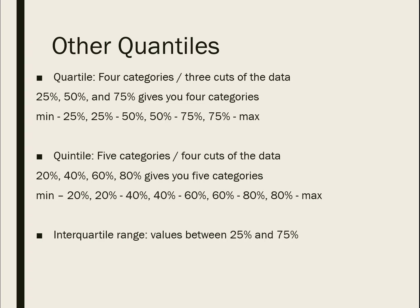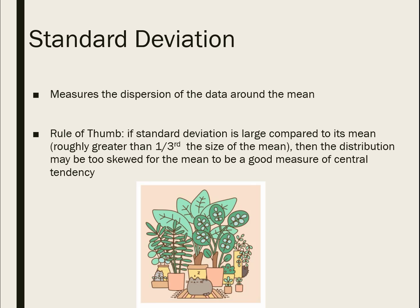Other quantiles you'll see are the quartile — four equal cuts at 25, 50, and 75 — and the quintile, which is five cuts. The interquartile range is one you'll see a lot. There's a five-number spread considered best practice in summary statistics: the minimum value, the 25th percentile, the 50th percentile, the 75th percentile, and the maximum. With those five numbers, you know pretty much everything you need to know about what's happening in that data.